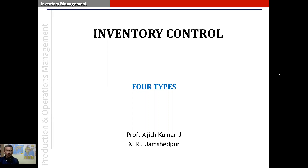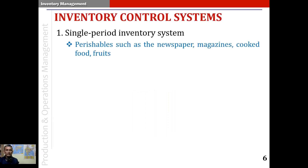There are four types of inventory control systems. The first type is called the single period inventory system. This system is used to manage the inventory of perishables, such as newspapers, magazines, cooked food, fruits, and so on. This inventory lasts only for one period.